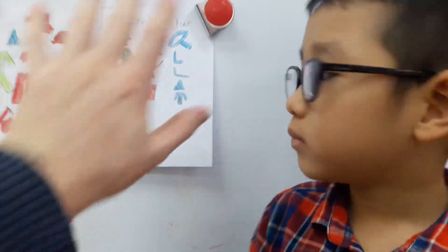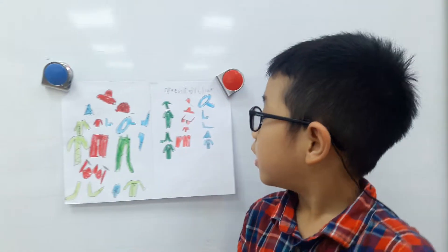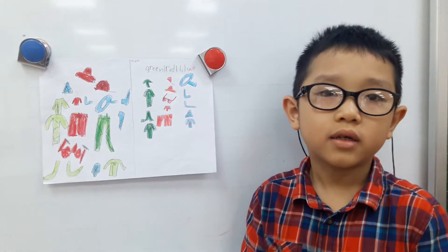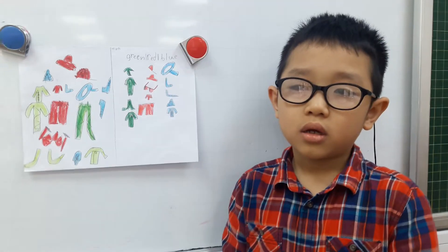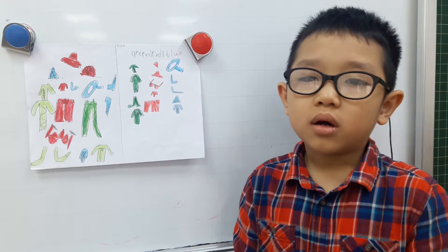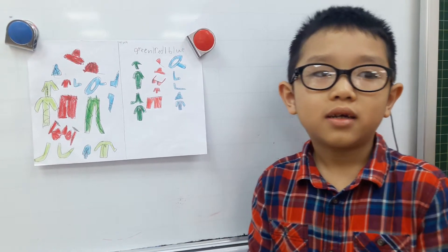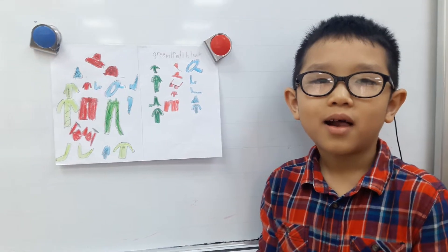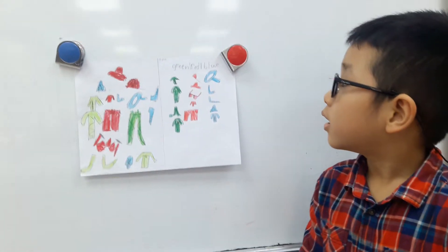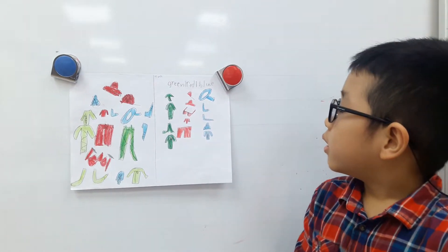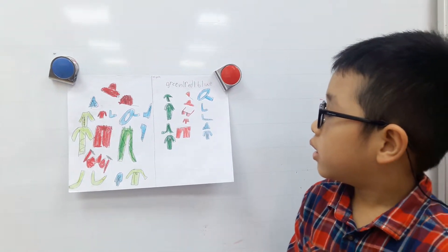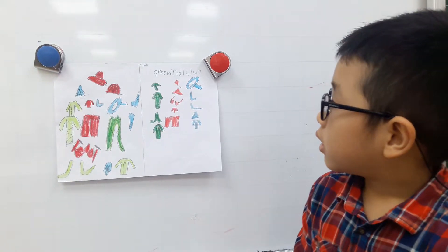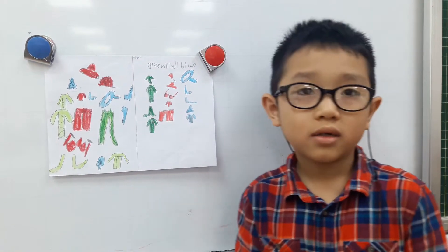And then what did you do over here, Nguyen Ming? I sorted them into groups. Good. And what are the groups called? Green and blue. Okay.